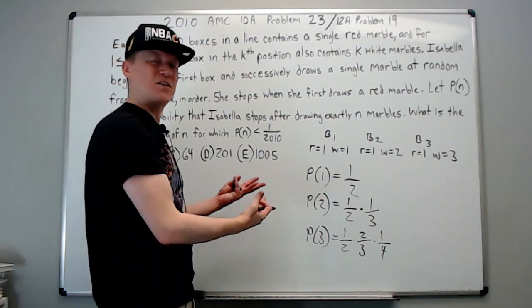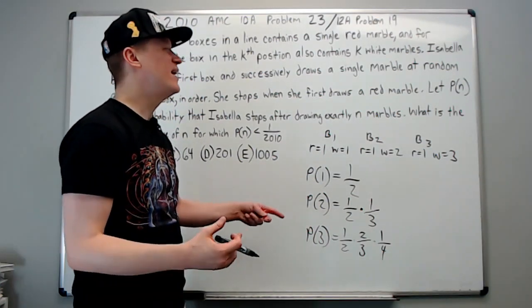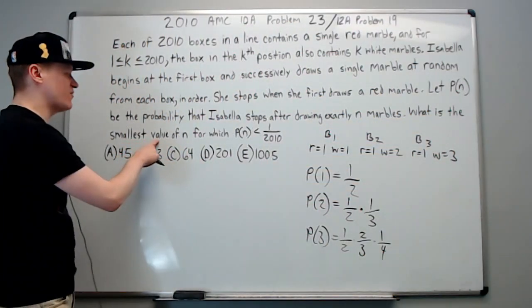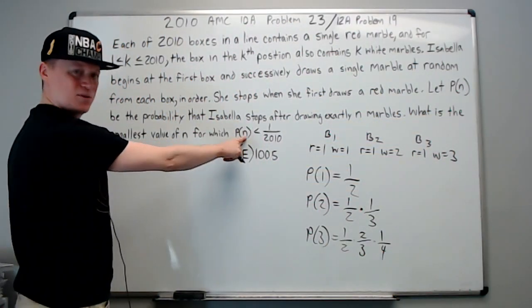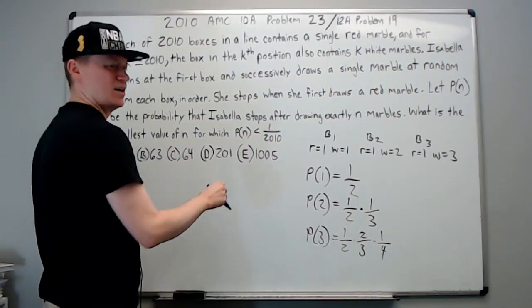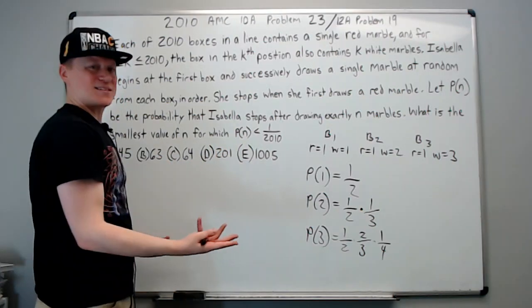We kind of have a feel for what's happening. We'll try to capitalize on our observations in a minute. Let's finish reading the problem. What is the smallest value of n, again that's the number in the parenthesis, for which P(n) is less than one over 2010? Again, n is the box that she stops on, the box that she draws red.